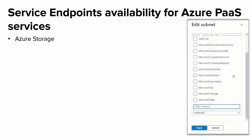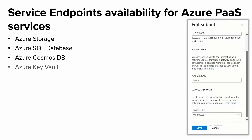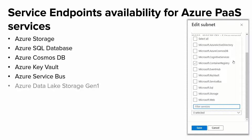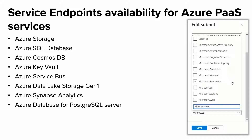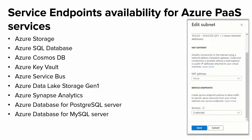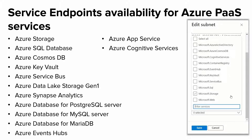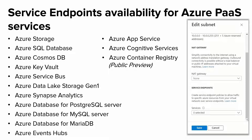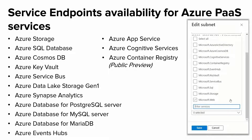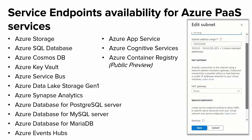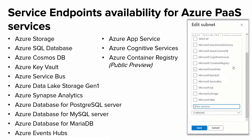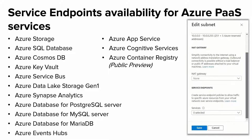The Azure services supporting service endpoints include: Azure Storage, Azure SQL Database, Azure Cosmos DB, Azure Key Vault, Azure Service Bus, Azure Data Lake Storage Generation 1, Azure Synapse Analytics, Azure Database for PostgreSQL Server, Azure Database for MySQL Server, Azure Database for MariaDB, Azure Event Hubs, Azure App Service, Azure Cognitive Services, and Azure Container Registry (in public preview). When you add or edit a subnet in your VNet, you'll see an option for service endpoints, and the dropdown lets you select Azure services shown as Microsoft resources. Service endpoints can be enabled for multiple PaaS services.